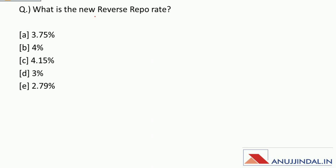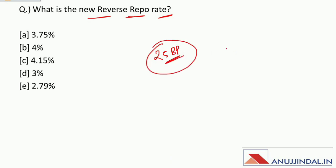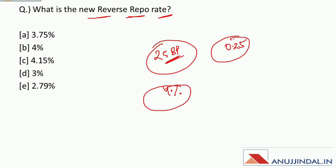What is the new reverse repo rate? Recently, RBI announced its monetary policy in which the repo rate was reduced by 25 basis points — that is 0.25%. Earlier the reverse repo rate was 4%; now it has been decreased by 25 basis points, so the new reverse repo rate is 3.75%.